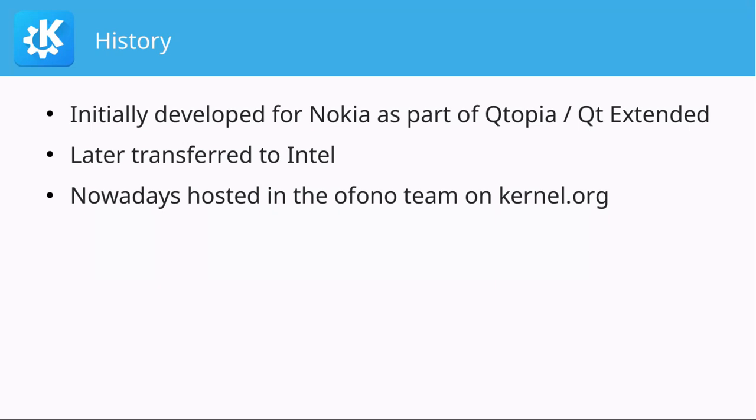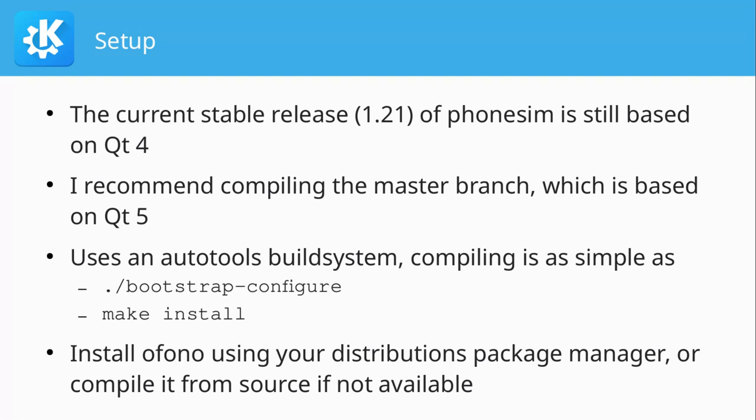So first we need to get it running. There is the issue that the current stable release, which is 1.21 at this point, is still based on Qt 4. Intel seems to use it actively, but they are not really Qt developers, so they didn't really notice Qt 4 was old. I talked to them and they are just using one VM image which works for them. It was ported to Qt 5. The developers are mostly focused on C and it uses an autotools-based build system. Compiling is easy enough if you use the default /usr prefix or /usr/local prefix.